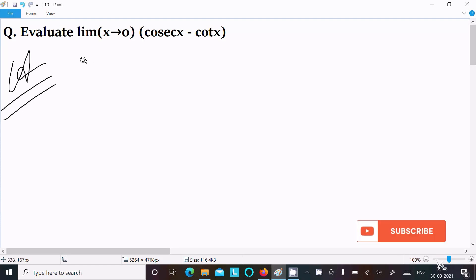First, writing the given limit: lim x→0 of cosec x minus cot x. We can easily achieve the output if I convert this into the sin and cos form.